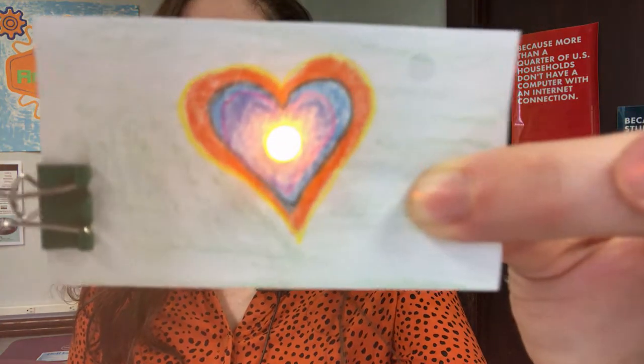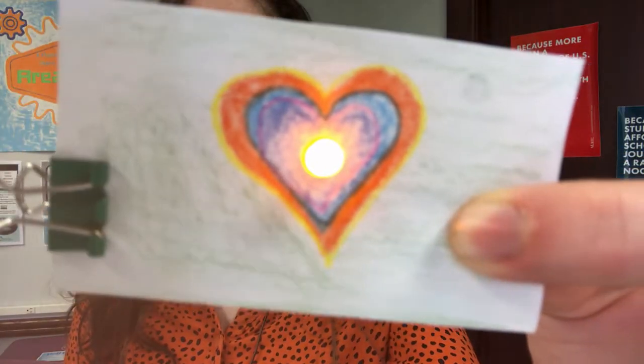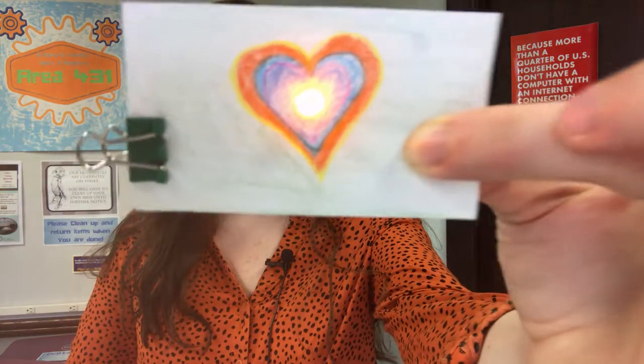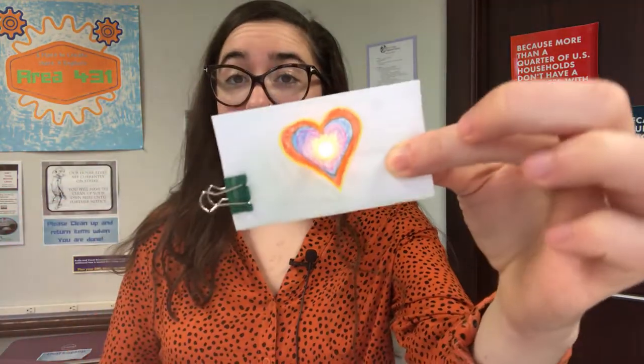This week, we have a craft activity that's great for kids. We are going to be making these little light-up cards or paper circuits. You're going to get a little LED light, a battery, and some copper tape. The copper tape conducts the energy from the battery and carries it to your light so that it lights up. You're going to get to make two of these, and you can put whatever kind of drawing you want on your card, and then you get to watch it light up.